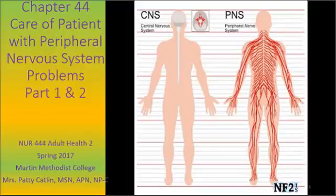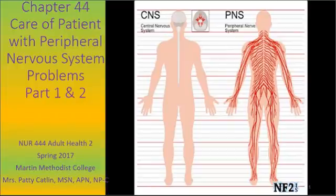Chapter 43 covered the central nervous system and the spinal cord. Chapter 44 covers the peripheral nervous system, and Chapter 45 covers traumatic brain injury, brain tumors, and abscesses. So in your objectives for weeks 9 and 12 on the nervous system, this is the section that will be covered.